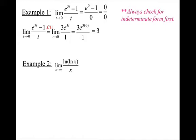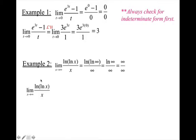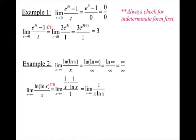I want you to try example 2 on your own. If I plug in infinity, I get infinity over infinity — so I'll use L'Hopital's Rule. To take the derivative of ln(ln(x)), I use the chain rule: that's (1/x) · (1/ln(x)), all over 1. After simplifying, I plug in infinity for x to get 1 over infinity, and a constant over infinity equals 0.